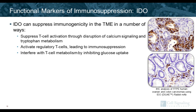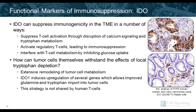One way to understand myeloid immunosuppression is to look at functional markers such as IDO and Arginase. IDO can suppress immunogenicity in the tumor microenvironment in several ways: it can disrupt calcium signaling and tryptophan metabolism, activate regulatory T cells leading to immunosuppression, or interfere with T cell metabolism by inhibiting glucose uptake. Immune cells are the main target of tryptophan depletion, as tumor cells can withstand these effects by upregulating several genes allowing improved glutamine and tryptophan import. IHC images of IDO staining show expression mostly in tumor cells in ovarian carcinoma, but mostly on immune cells within the stroma in colon carcinoma.